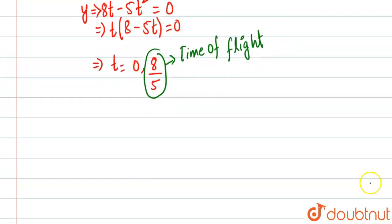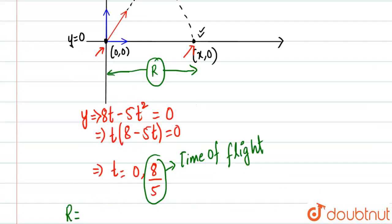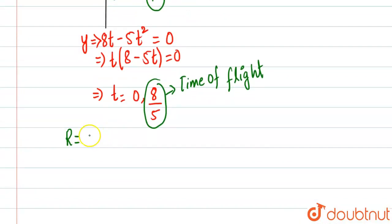So after drawing the graph, we will get a clear vision that range will be equal to basically, we will put it in that equation, which is 6t, and t will put from here.